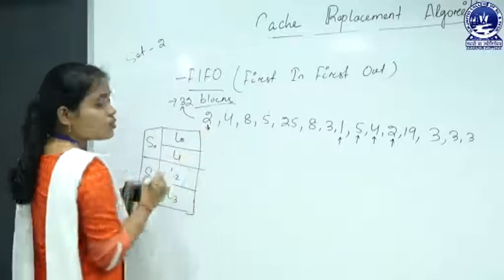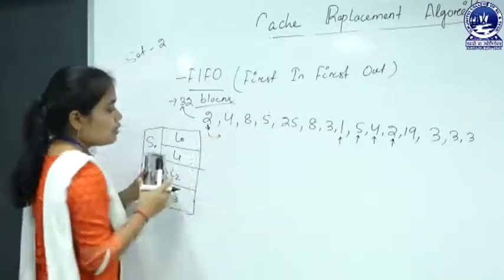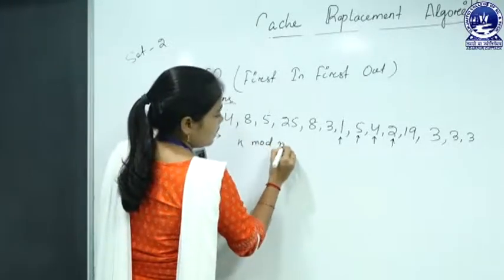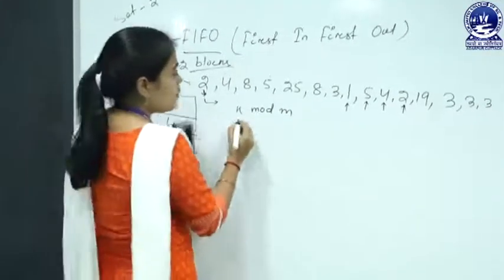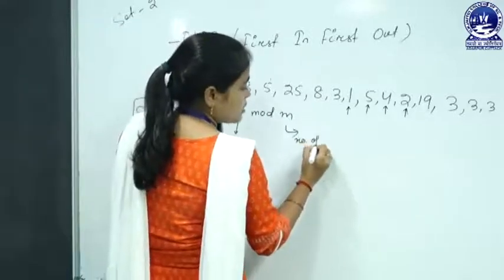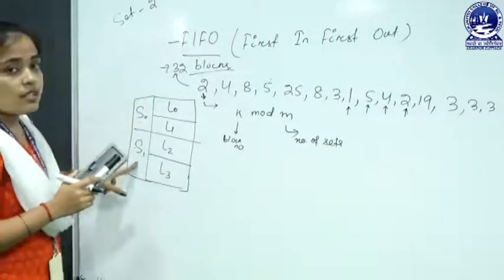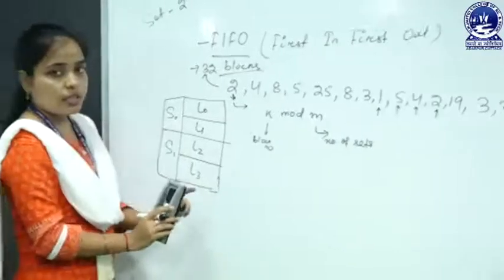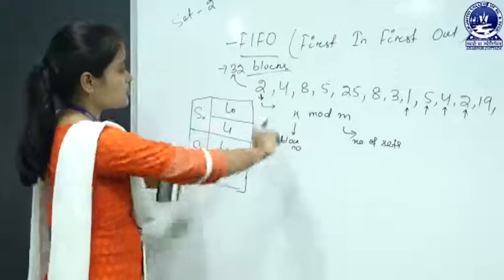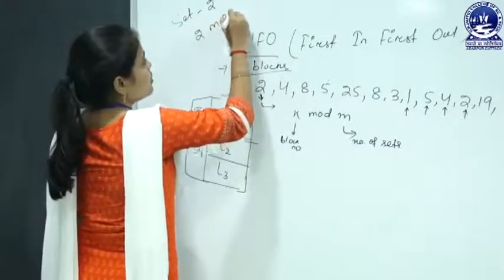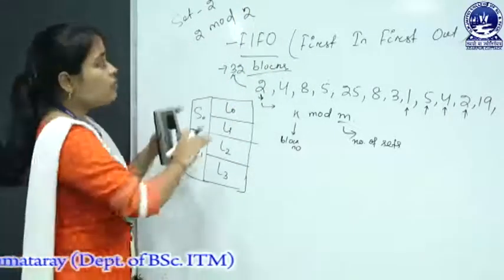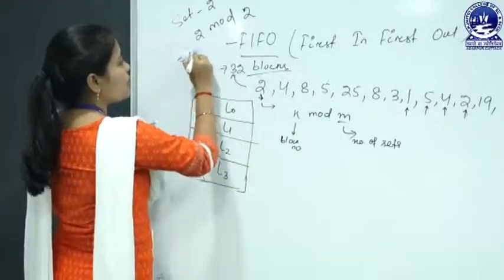To map memory blocks into the cache in set associative mapping, we use the formula k mod m, where k is the block number and m is the number of sets. Here m equals 2. For block 2: 2 mod 2 = 0, so it is placed in set 0. Set 0 has 2 lines, so we can place it in either — say L0. Then block 4: 4 mod 2 = 0, placed in set 0 in L1.